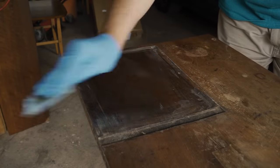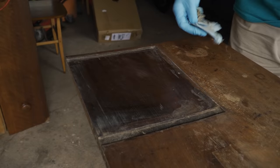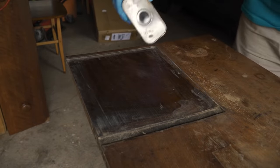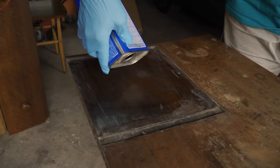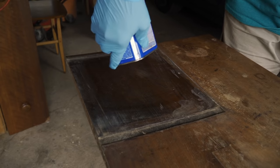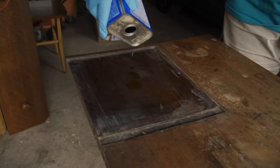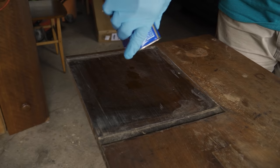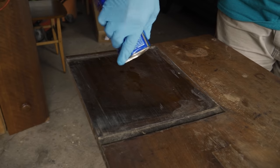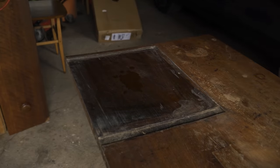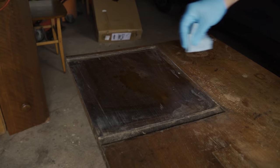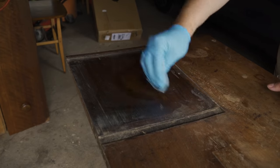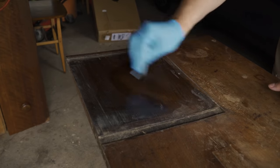I suspected that the finish was shellac, so I tested it just by dropping a little bit of denatured alcohol on the finish. Denatured alcohol will dissolve shellac. So if it dissolves the finish, then that tells me it's shellac. And sure enough, after just a minute or so, it had dissolved the finish.